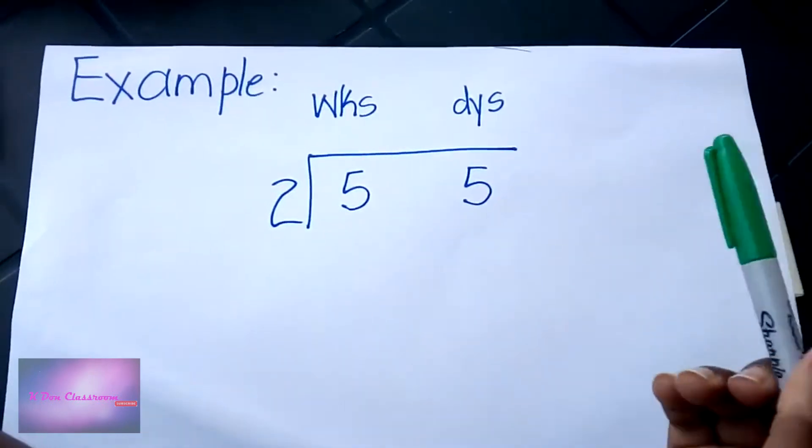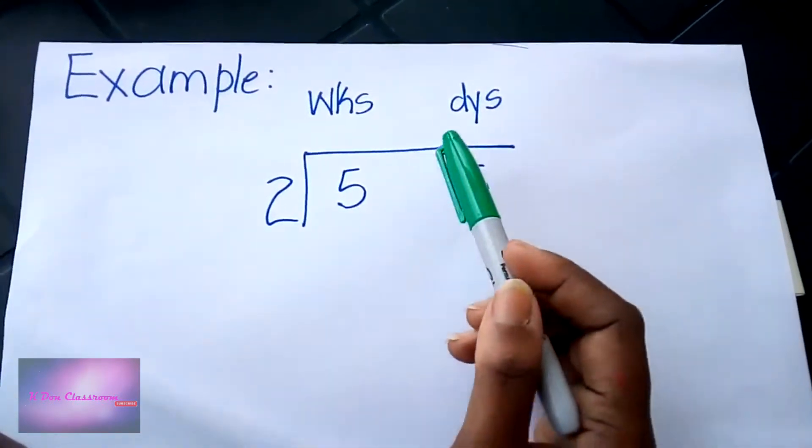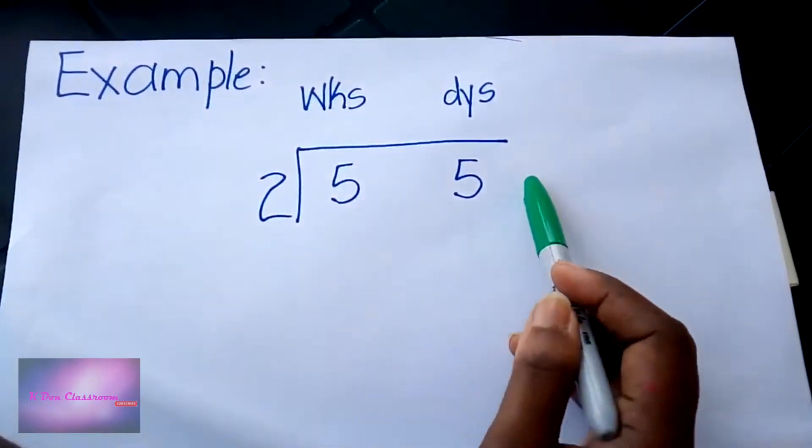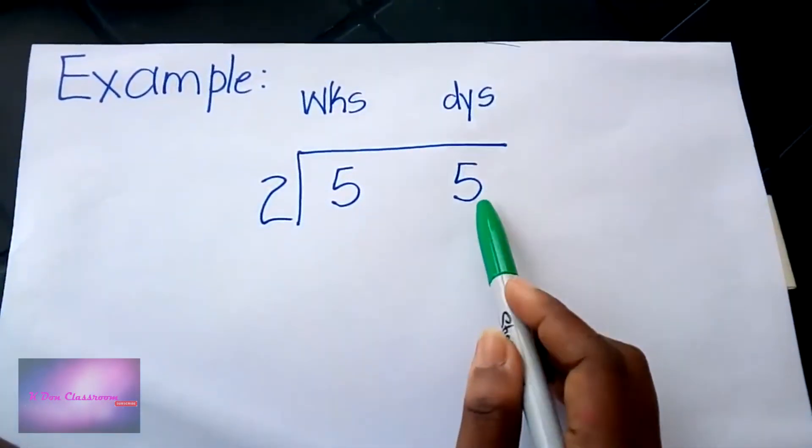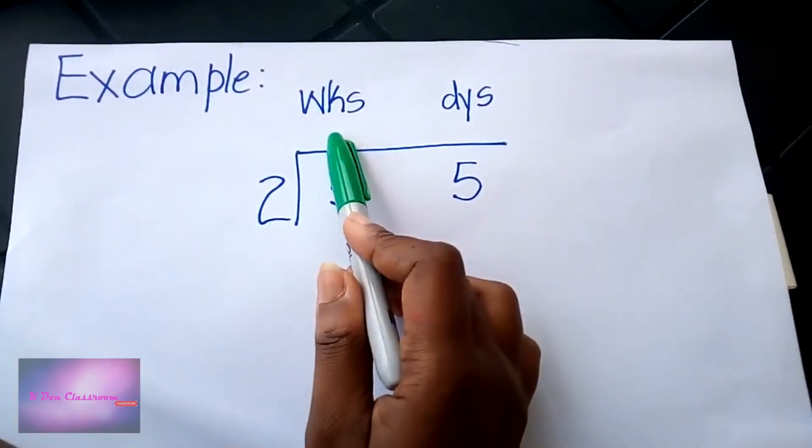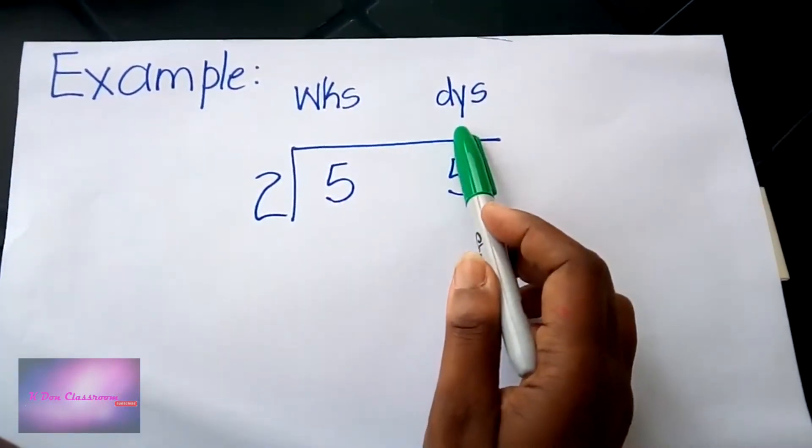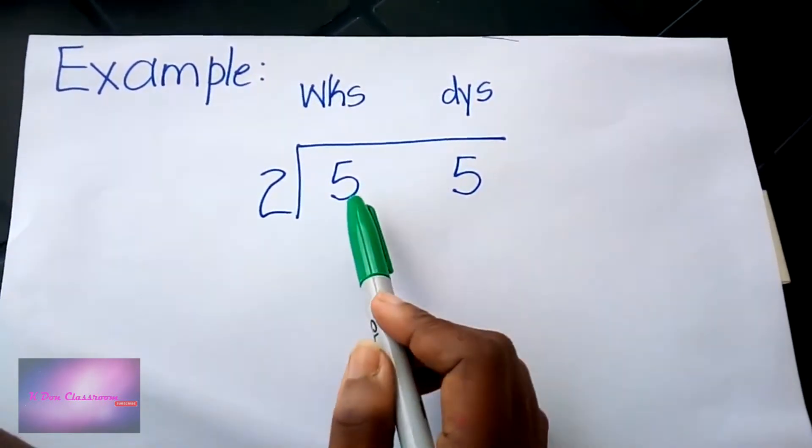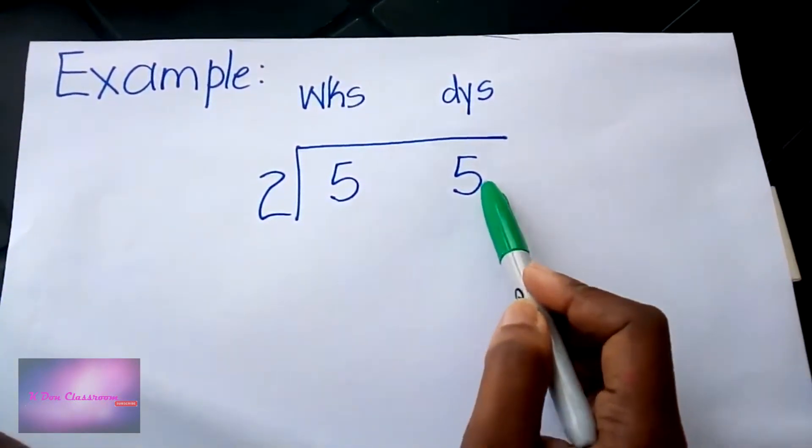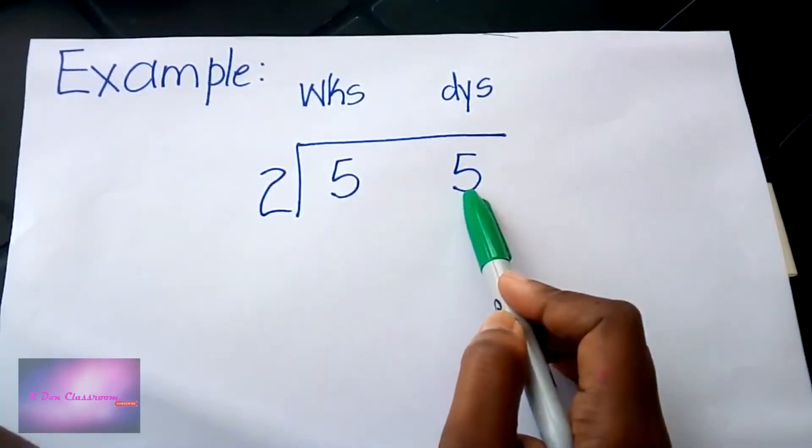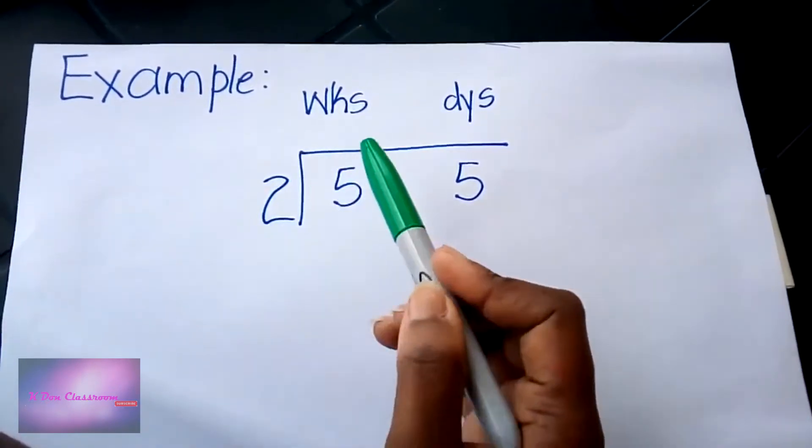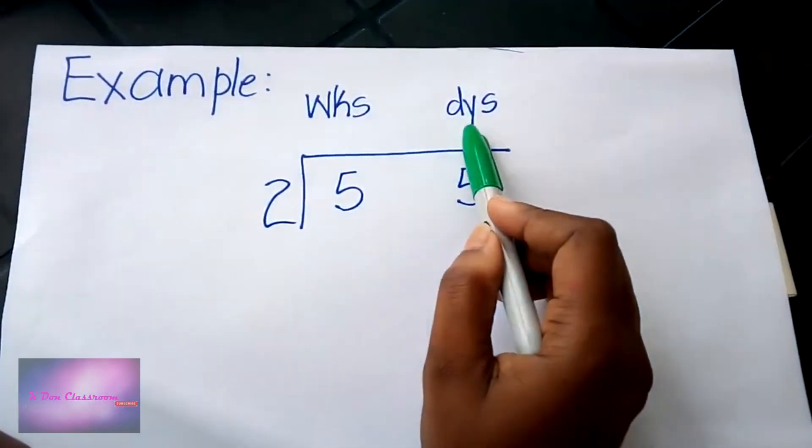Let's go ahead and look at our first example. We have set it out just as how we would have set out a division problem, but we have separated weeks and we have separated days. This is saying five weeks and five days, and we're going to divide both of them by two.